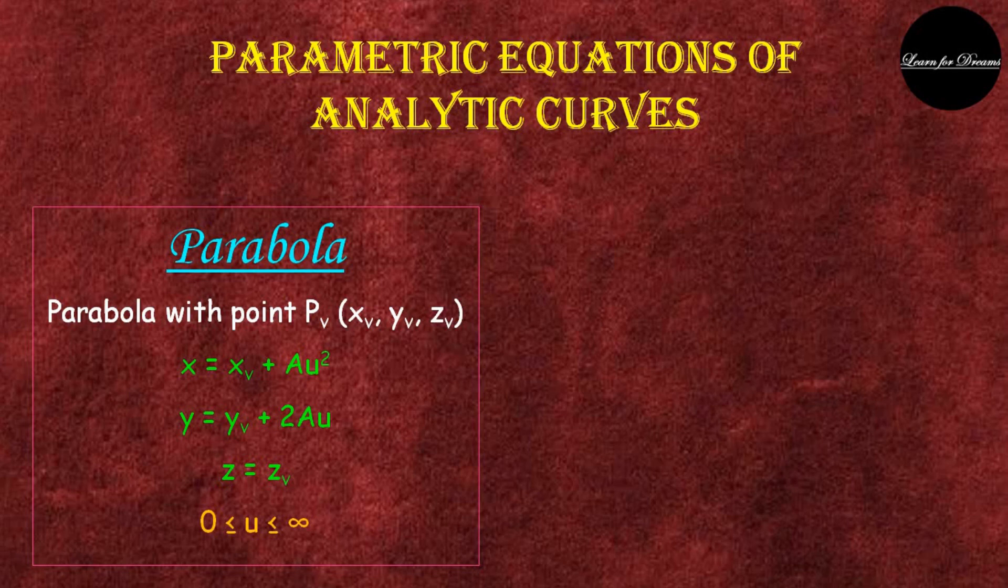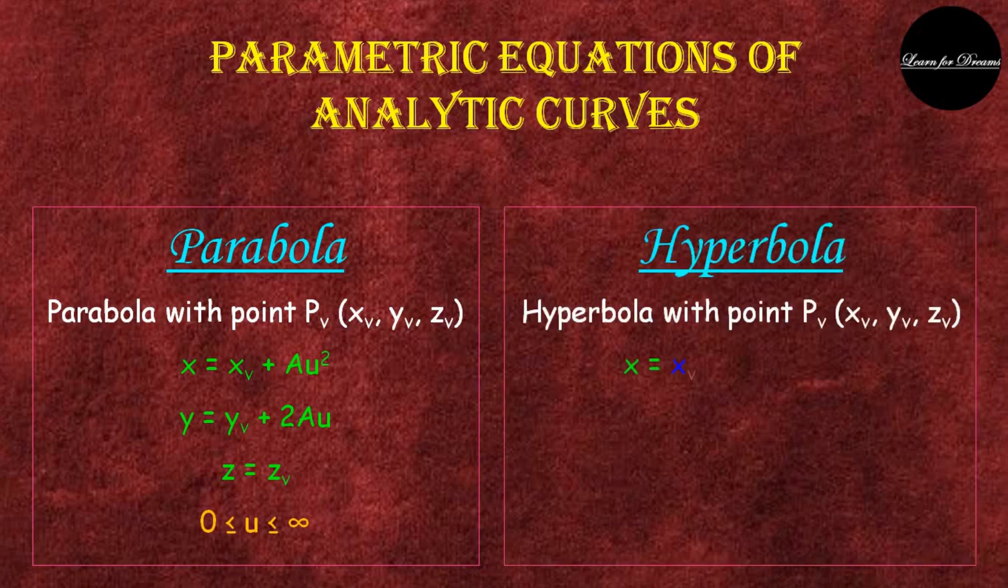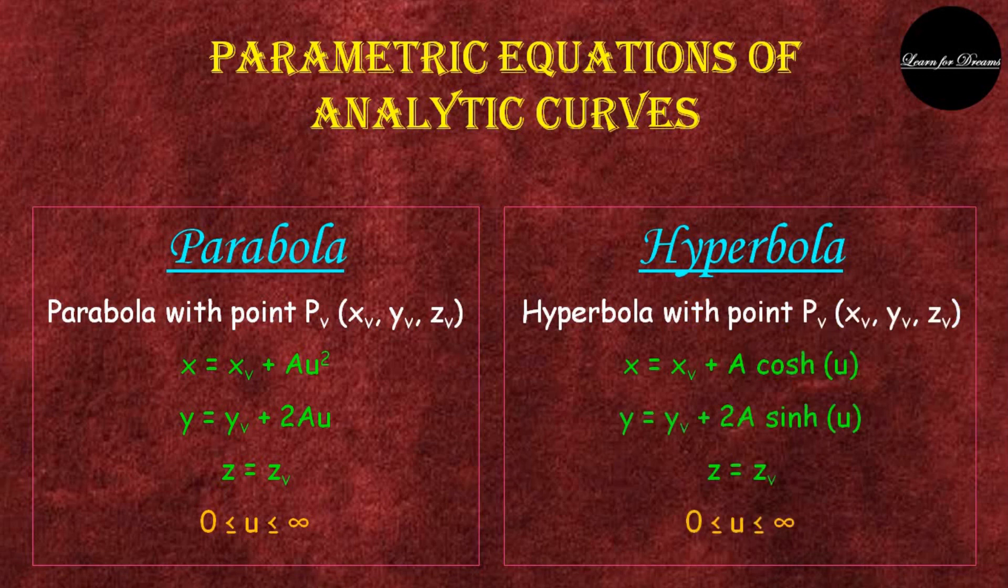U should lie between 0 to infinity. For hyperbola, x is equal to xv plus a cosh u, y is equal to yv plus 2a sinh u, and z is equal to zv.